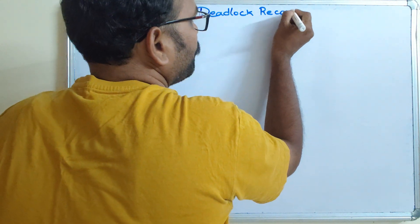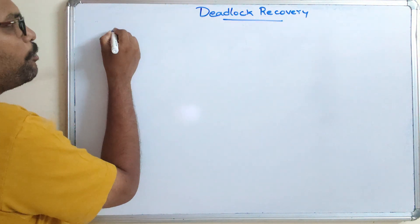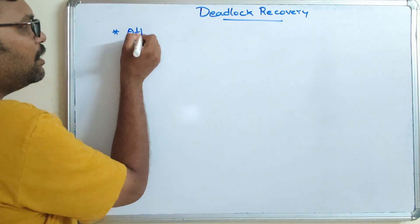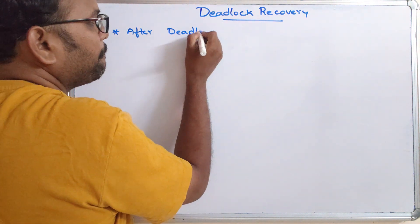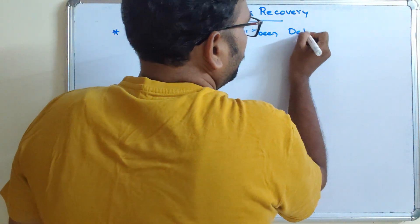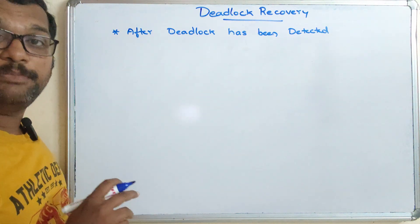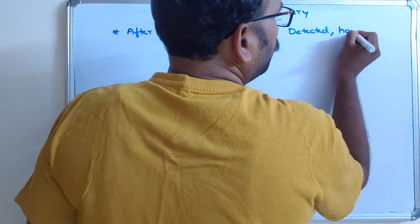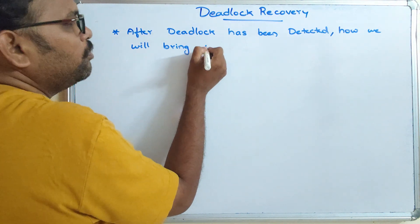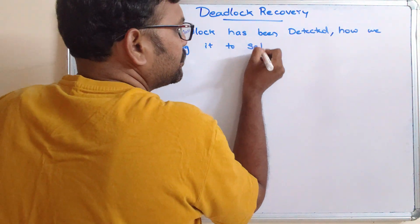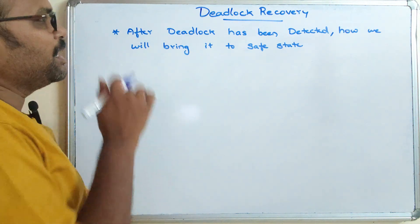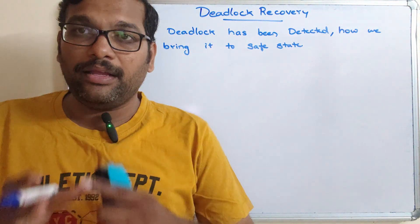Deadlock recovery. After a deadlock has been detected, how do we bring the system back to a safe state? Safe state means avoiding the deadlock. This deadlock recovery can be done in two procedures.